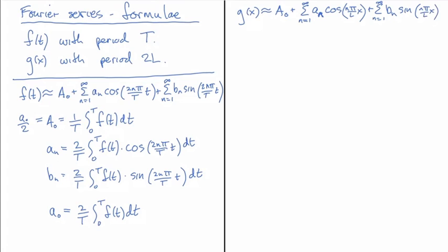And so the difference between these two formulations are here in the argument. Here I have n pi x over L, and over here I had 2n pi over T.